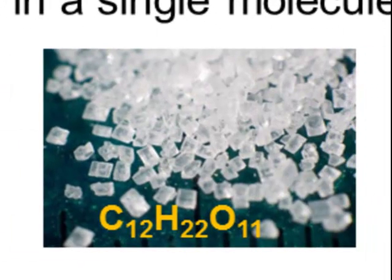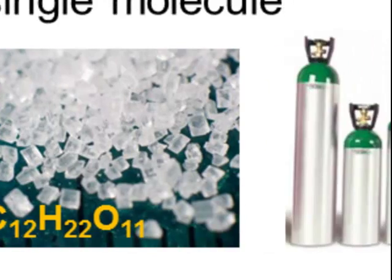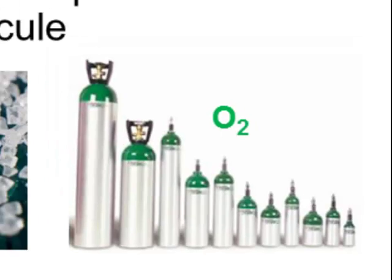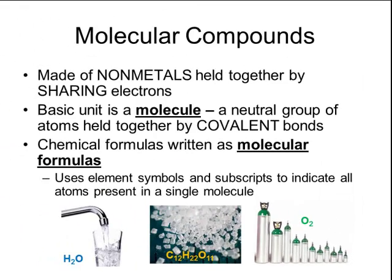Sucrose is a type of sugar which has the chemical formula C12H22O11, and an oxygen molecule is actually a diatomic molecule which has the formula O2. All of these are examples of molecular formulas because they show the exact elements present in each molecule.